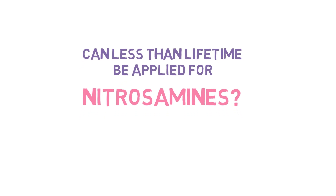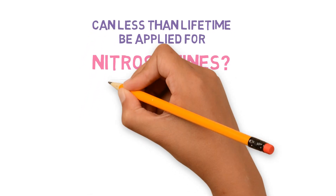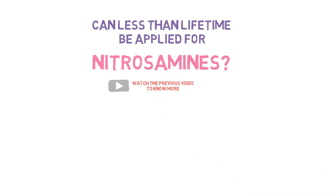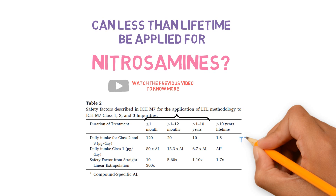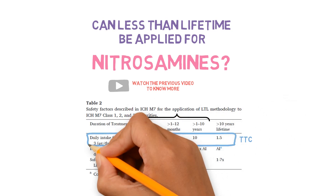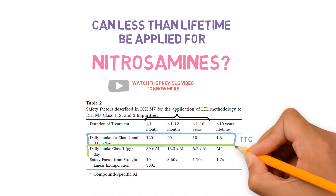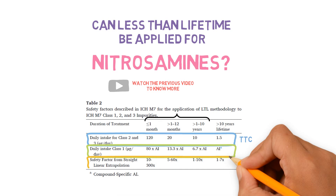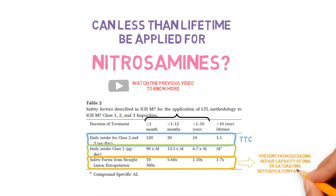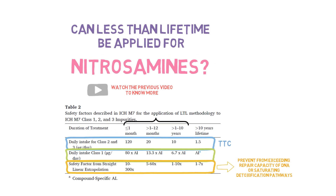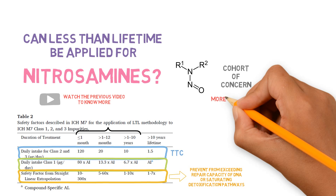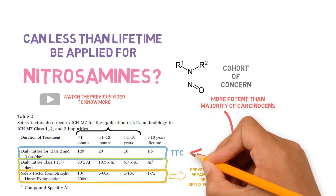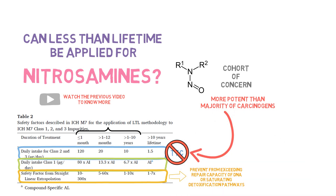Can less than lifetime be applied for nitrosamines? In a previous video we explained that the less than lifetime approach is a way of adjusting the acceptable intake of a mutagenic impurity whenever the exposure is for less than a lifetime. ICH M7 describes how the TTC is adjusted for class 2 and 3 impurities, and the same applies for class 1 impurities as well. All these include safety factors which prevent us from exceeding the repair capacity of DNA or saturating detoxification pathways. Now, what about nitrosamines? These compounds are considered to be in the cohort of concern because they are more potent than the majority of carcinogens, so the TTC described in ICH M7 is not applicable for this class and they generally need to be controlled at lower limits.